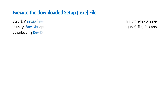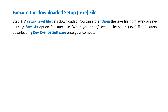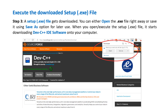A setup file gets downloaded — it is a file with a .exe extension. You can either open the setup file right away or save it using the Save As option for later use. When you open or execute the setup or .exe file, it starts downloading Dev C++ IDE software onto your computer.